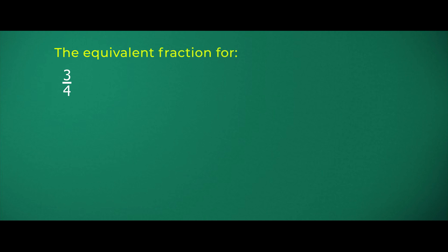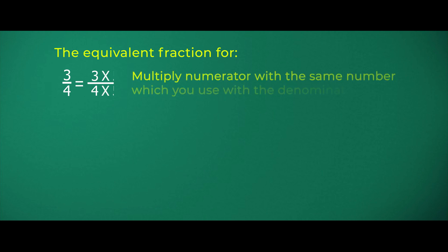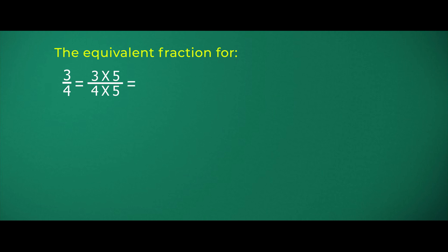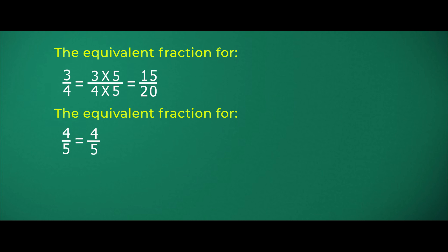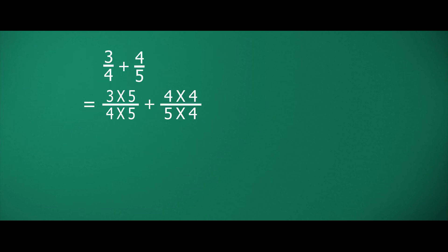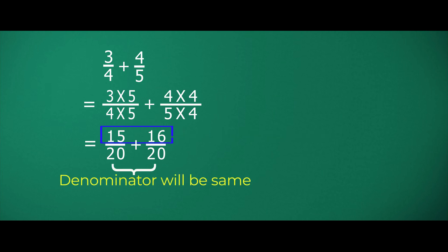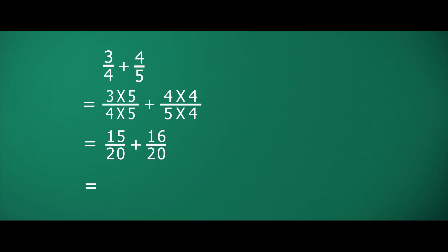The lowest common multiple of four and five is twenty. As the LCM of four and five is twenty, we are going to find equivalent fractions of three-fourths and four-fifths by making the denominator twenty. Four times five is twenty, so we multiply the numerator by five as well: three times five gives us fifteen. So fifteen over twenty is equivalent to three over four. For four-fifths, five times four is twenty, so four times four is sixteen. Sixteen over twenty is an equivalent fraction of four-fifths. Now we have to add the numerators while the denominator stays the same. After adding the numerators we got thirty-one over twenty.